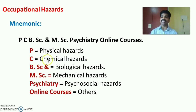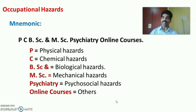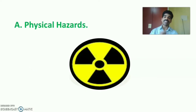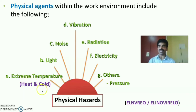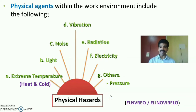The first classification is physical hazards — physical agents within the work environment. There are seven important physical agents: extreme temperature (heat and cold), light, noise, vibration, radiation, electricity, and others (pressure). A mnemonic is ELNVREO — E: extreme temperature, L: light, N: noise, V: vibration, R: radiation, E: electricity, O: others. Alternatively, use 'Elino-Virello.'